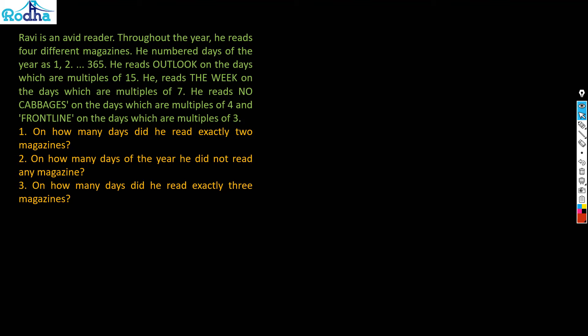We have this fantastic set here. Ravi is an avid reader throughout the year — he reads four different magazines. From days 1 to 365, he reads Outlook on days which are multiples of 15, The Week on multiples of 7, No Cabbages on multiples of 4, and Frontline on multiples of 3.